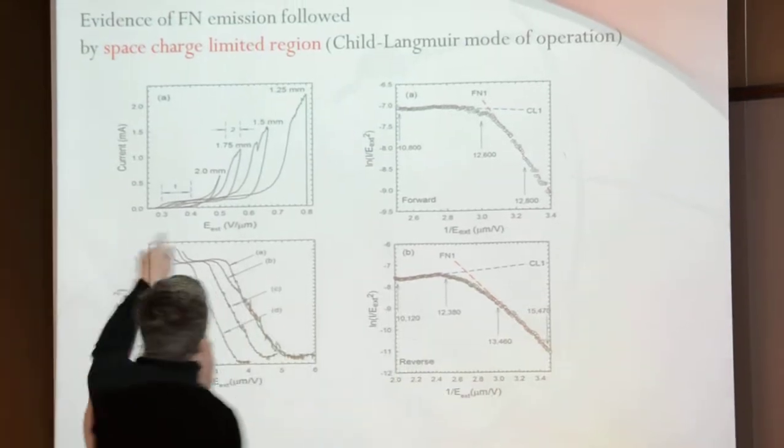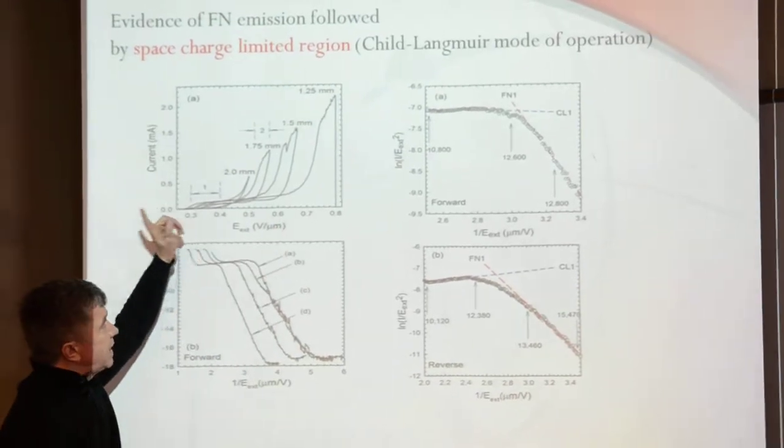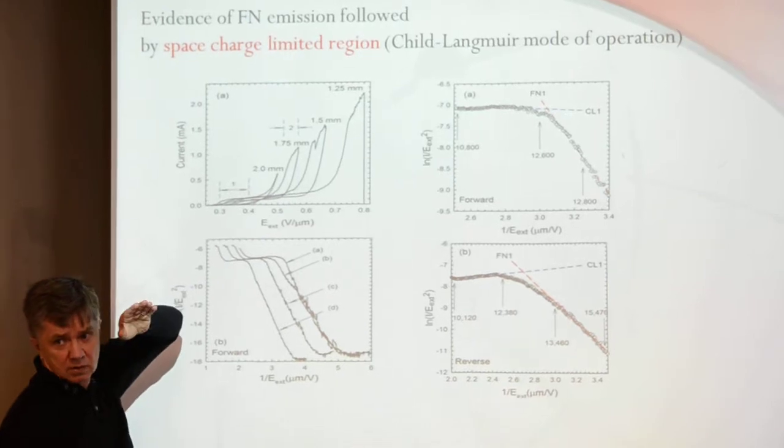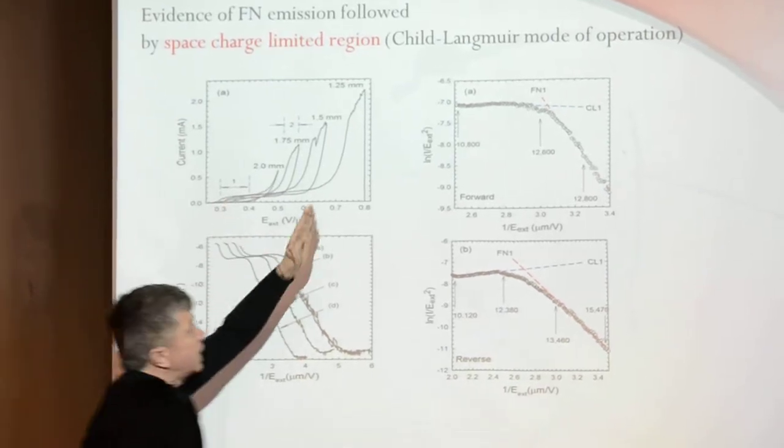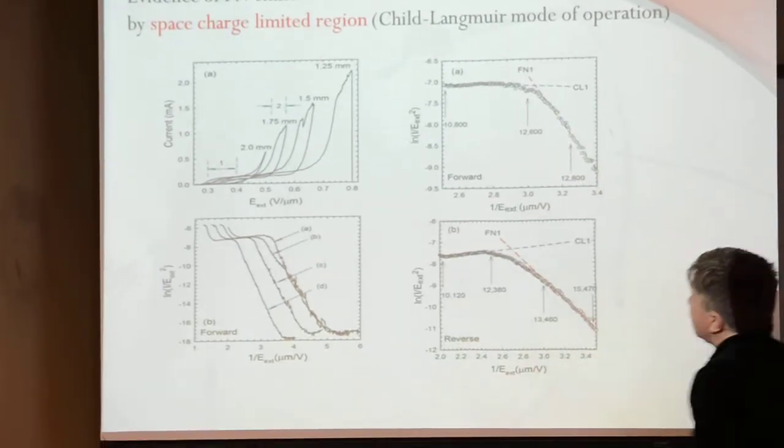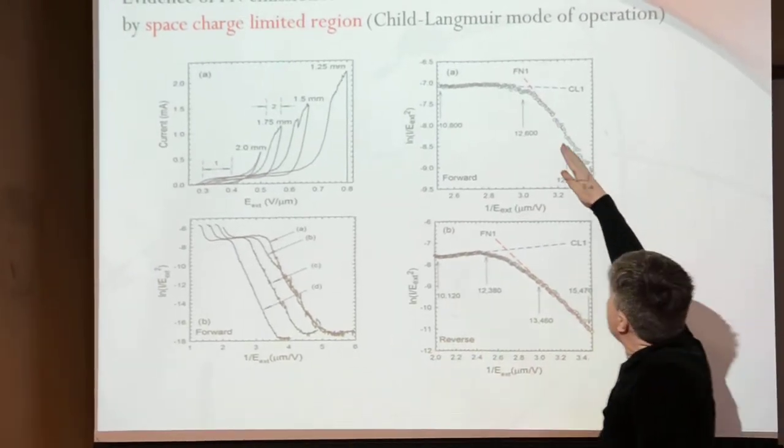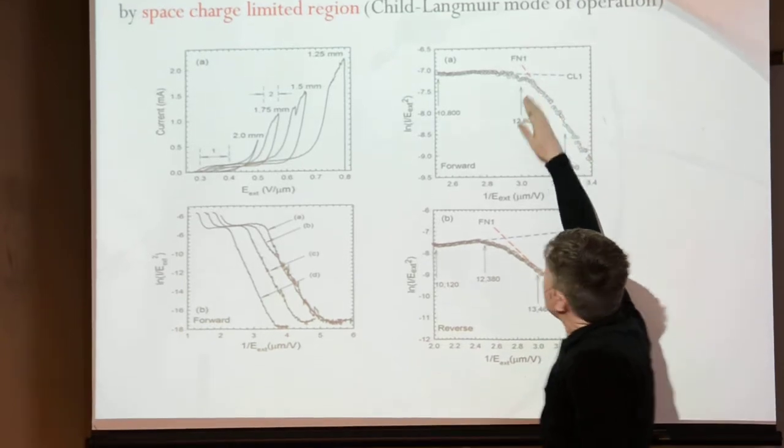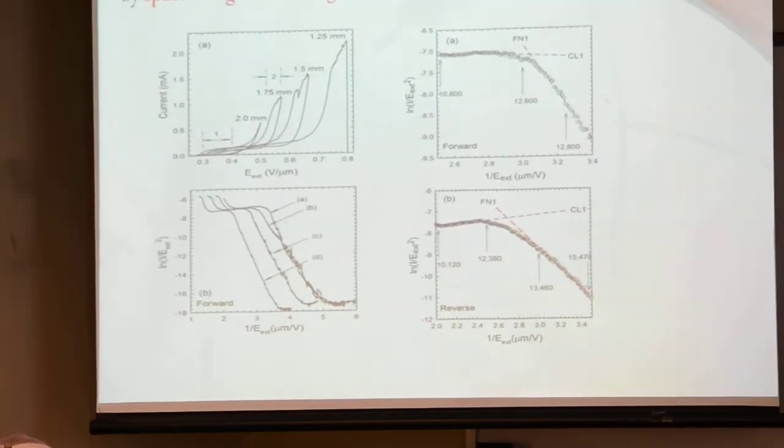This is I versus V. Let me take one curve and do the Fowler-Nordheim plot. What should I get? If I get logarithm of I over V squared, one over V, I should get a straight line. Indeed, it's tunneling through the triangle barrier. More and more charge later on in front of the cathode. Eventually there's so much that you form a plasma.